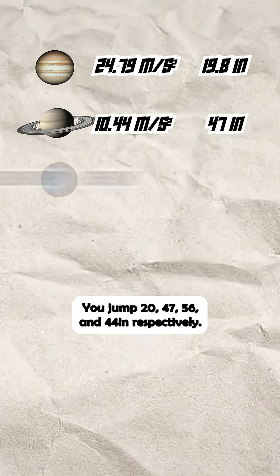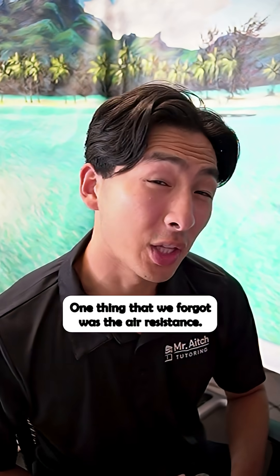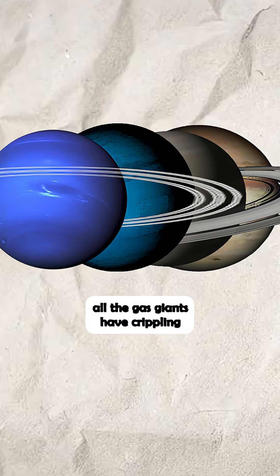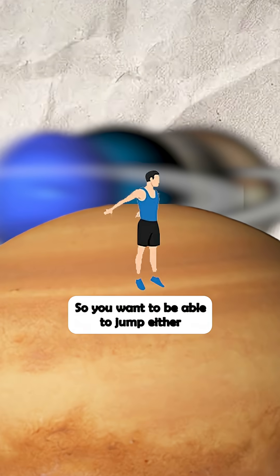You jump 20, 47, 56, and 44 inches respectively. One thing that we forgot was the air resistance. All the gas giants have crippling air resistance, as well as Venus, so you wouldn't be able to jump either.